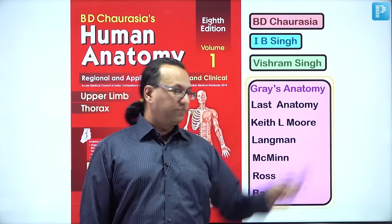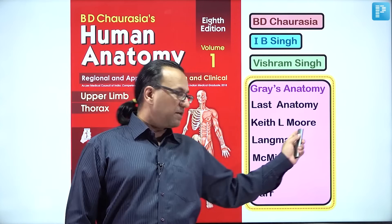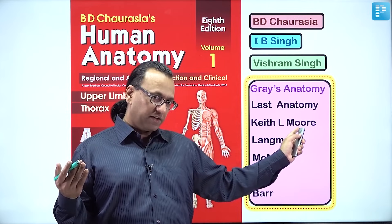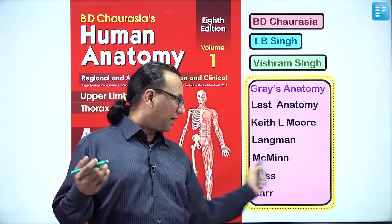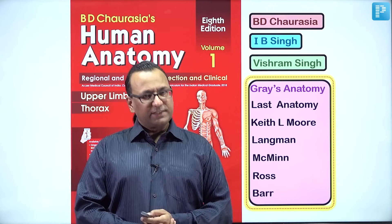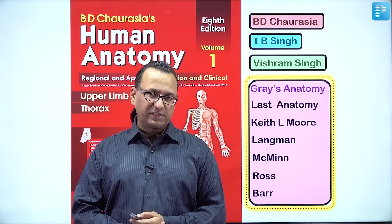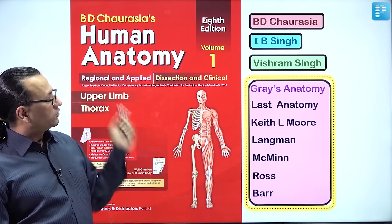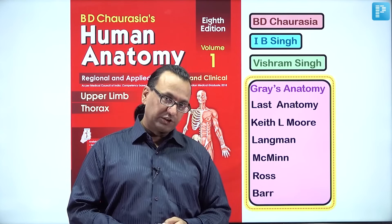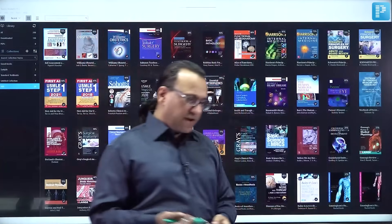Someone might tell you about Gray's Anatomy, or Keith L. Moore for clinical anatomy — these are all good books to enhance your knowledge, along with Langman's Embryology, McMinn's Atlas, Rao's Cytology, and Barr's Neuroanatomy. But the list is endless and you don't have time, especially in first year. Maybe once your MBBS is over you can go back to these books to enhance your knowledge, but not before getting a PG seat.